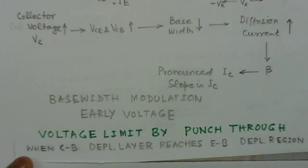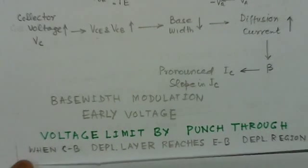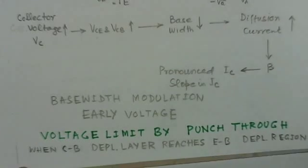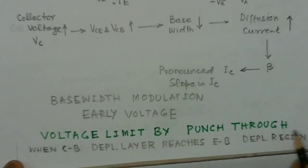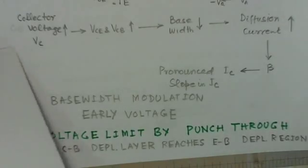When we further increase collector-to-base voltage, the depletion layer reaches emitter-base depletion region. So the base region is completely wiped off. In that case, this ultimate voltage limit, and the punch through occurs in the transistor, and the transistor operation stops.